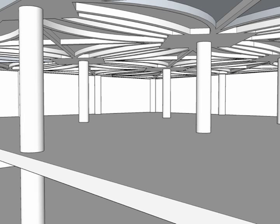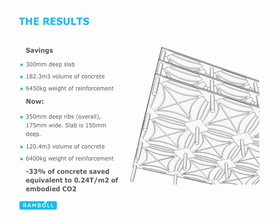Here's a 3D view of the result. If you compare a 300mm-deep flat slab over the grid and floor size we've chosen, this results in a volume of concrete of 182 cubic metres, with a weight of reinforcement of just over 6,000 kilograms. Comparing that to the new solution, we end up with a slightly deeper structure — 350mm deep ribs — but they're quite narrow.